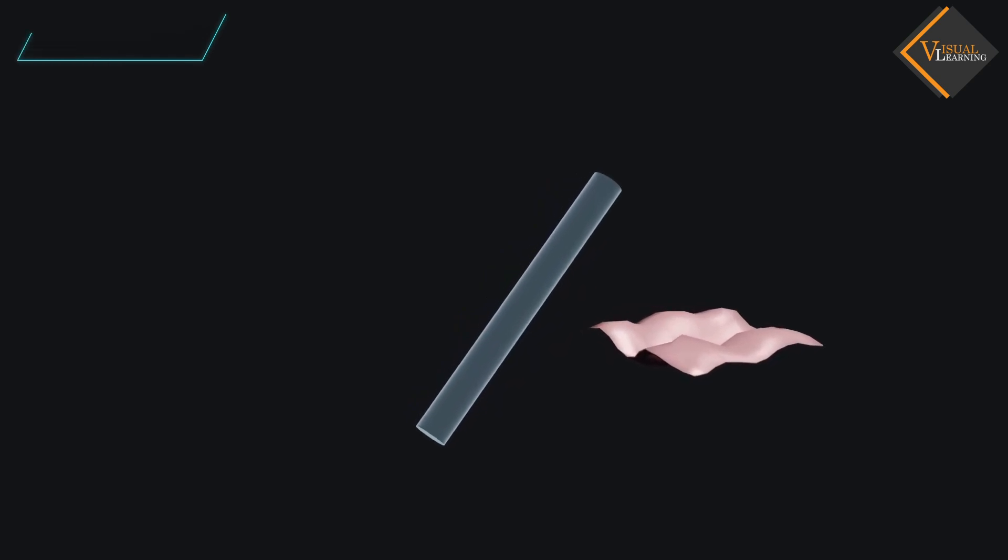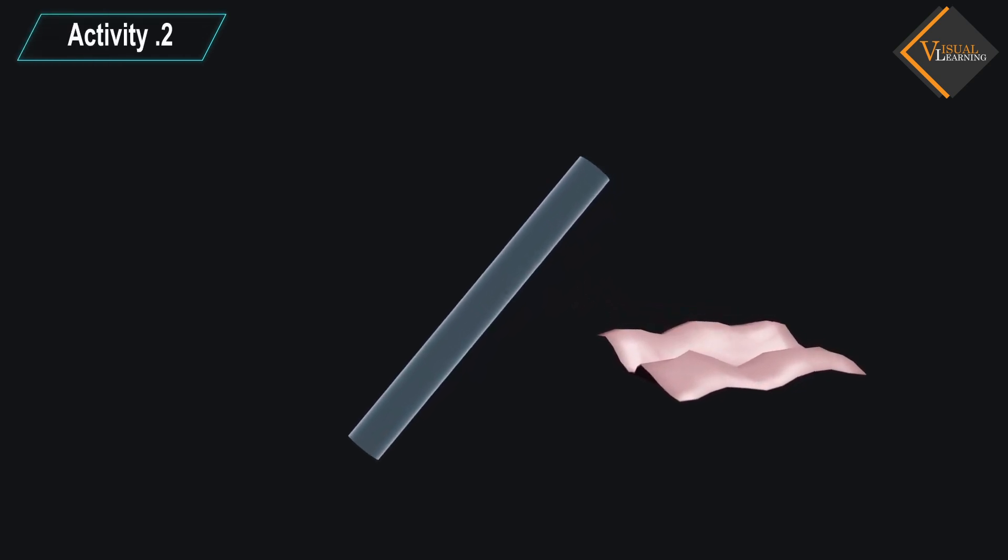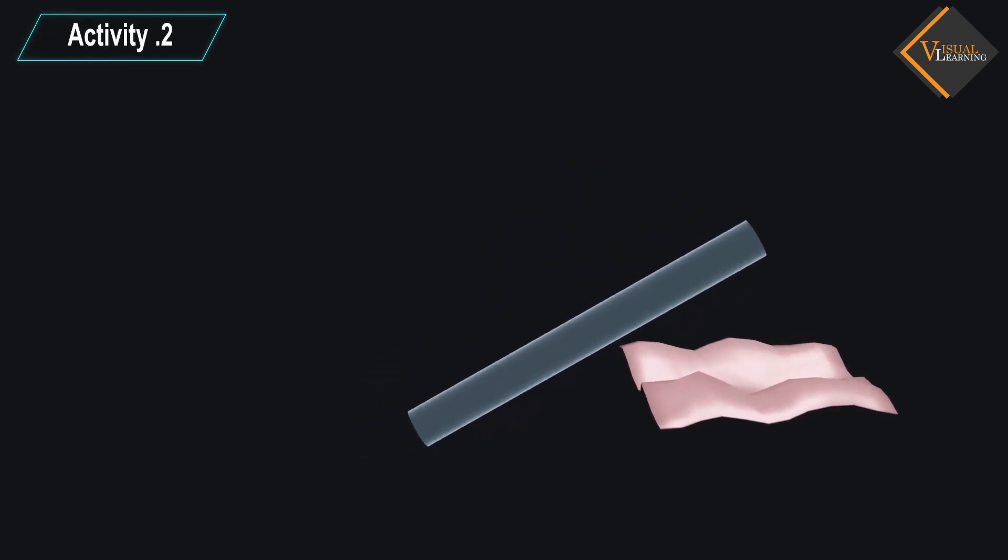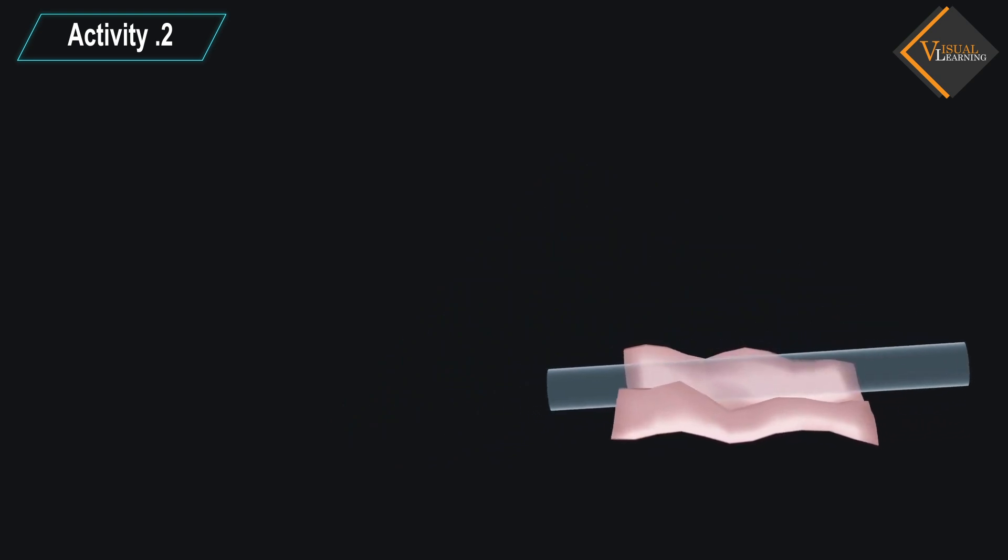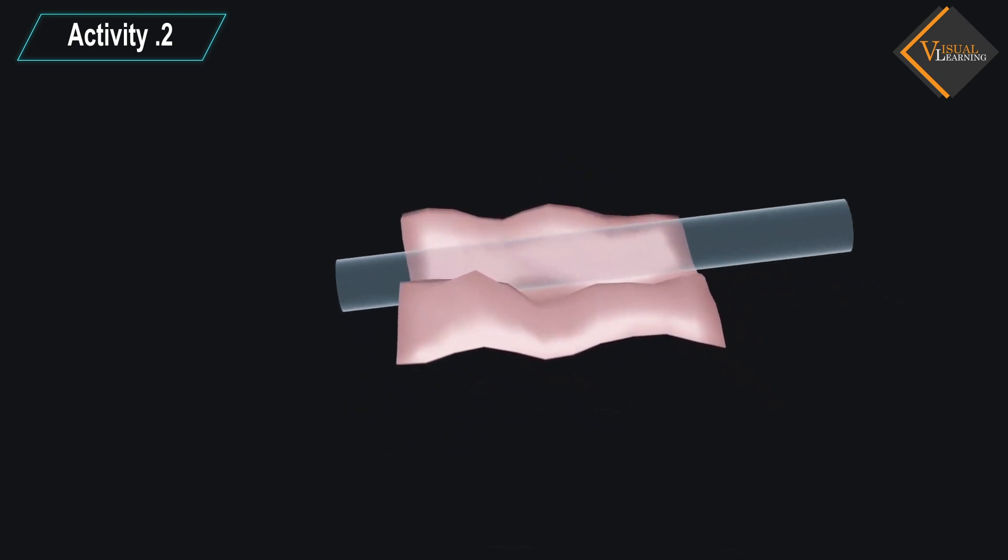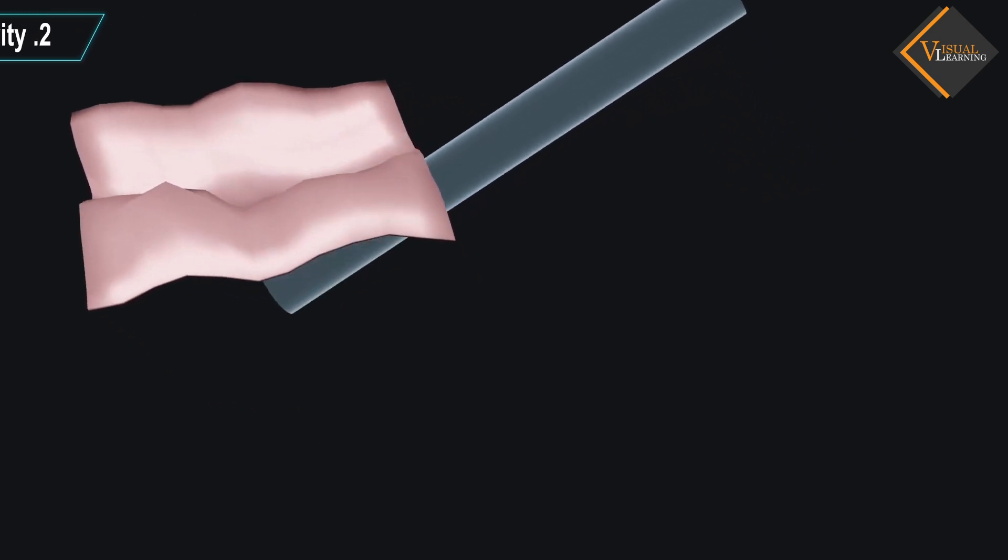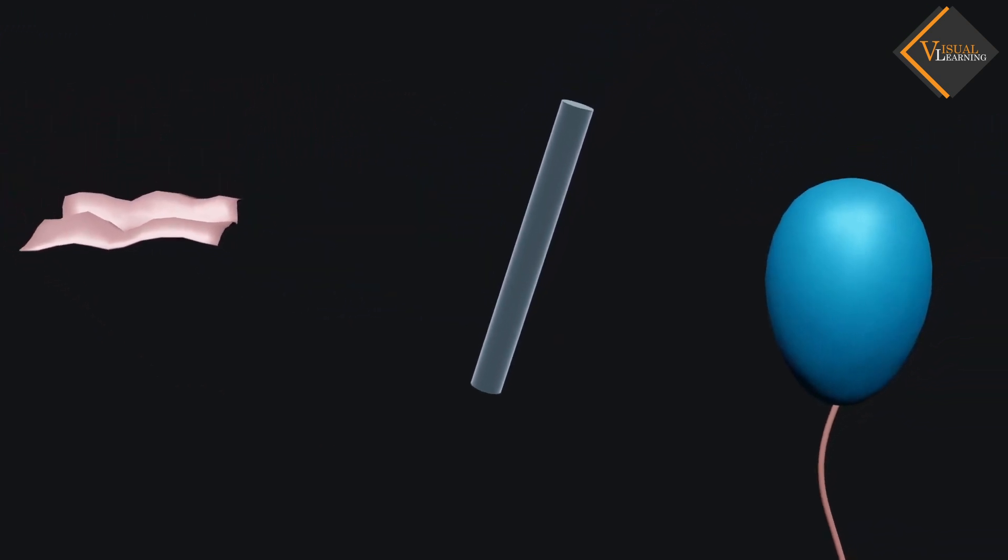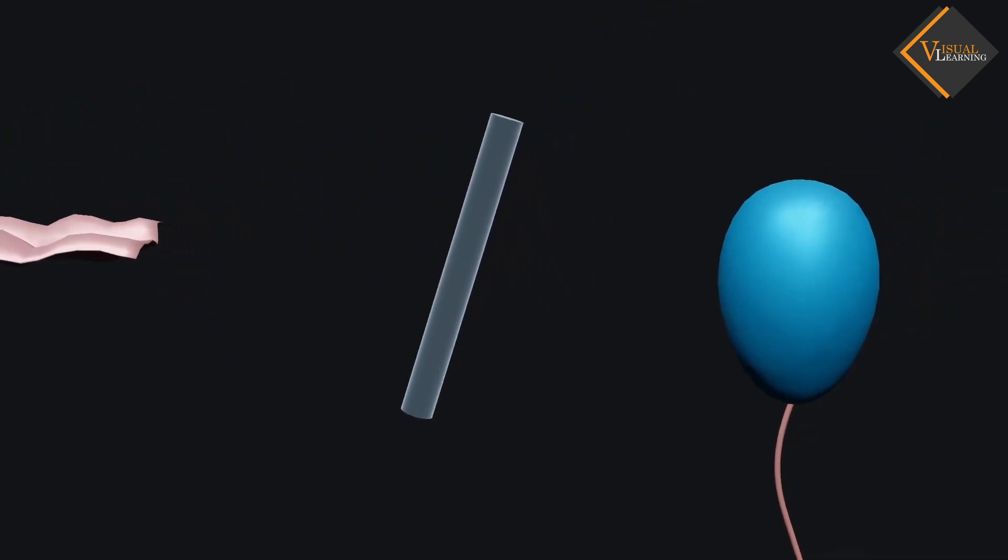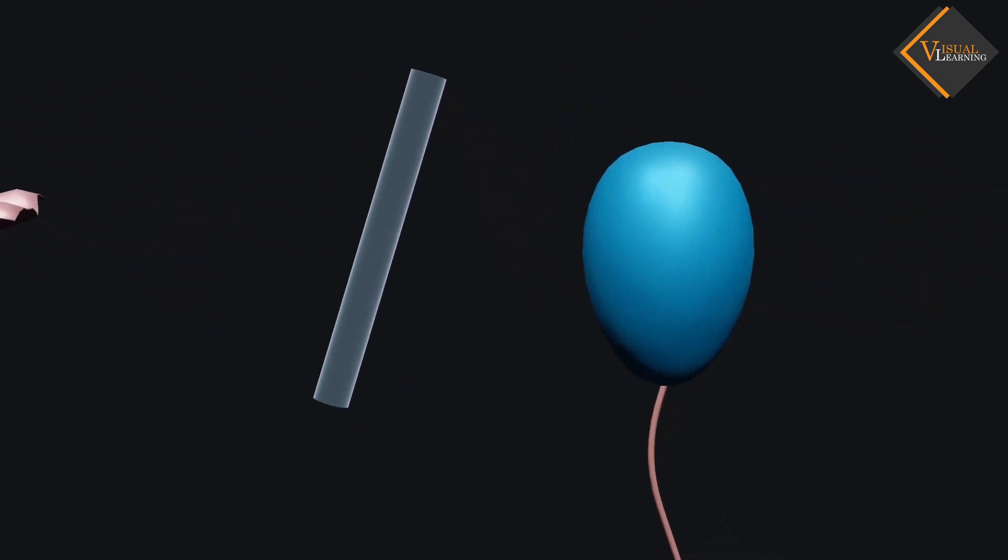Now, take a glass rod. Rub this glass rod with silk cloth. After that, bring this rod near to an inflated balloon. We will see that rod attracts the balloon.